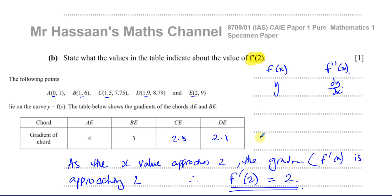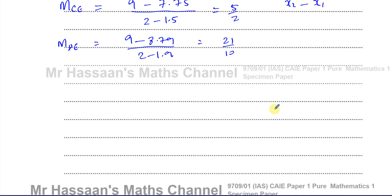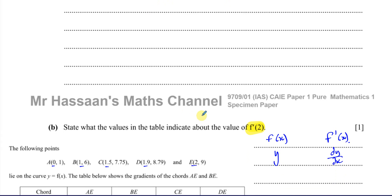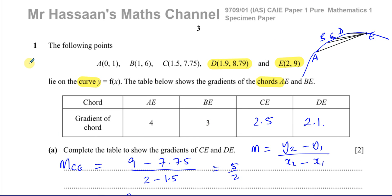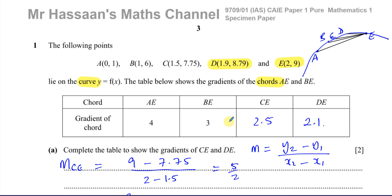So there we have the answer to part B of this question. Just one mark. All you really have to do is write f'(2) equals 2. That would be fine. But I'm just giving you some understanding of what this actually means. f'(x) means the gradient function. As we get closer and closer to E, the gradient of the chord gets closer and closer to 2. That's what it's basically showing us there. So that completes question number 1. This will be under the topic of differentiation, because this is kind of linked to our understanding of how to derive the gradient function from first principles.